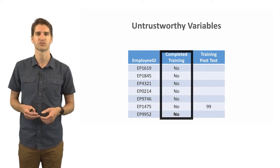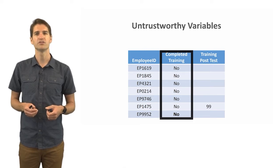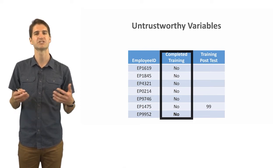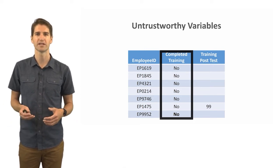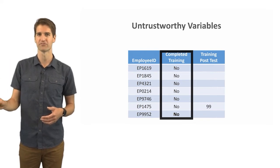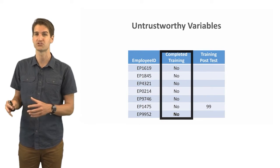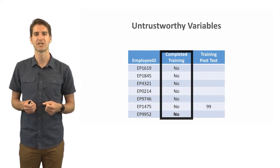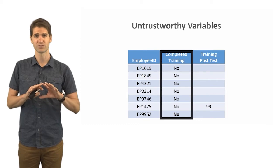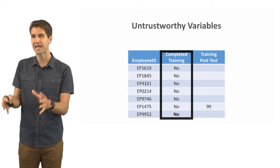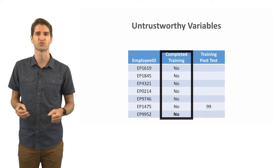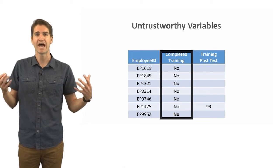Let's look at this table here. We have three columns: we have the employee ID column, a completed training column where let's assume you either complete the training which is yes or you don't complete the training which is no, and then we have a training post-test column. This is the score that someone received on the training post-test. Take a look here at this completed training column. Notice that every single response is no—no one completed the training.